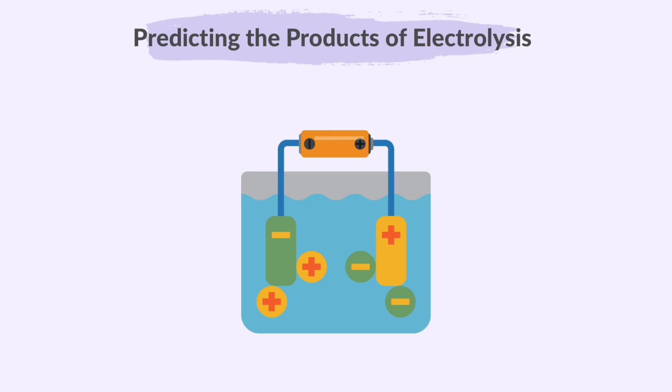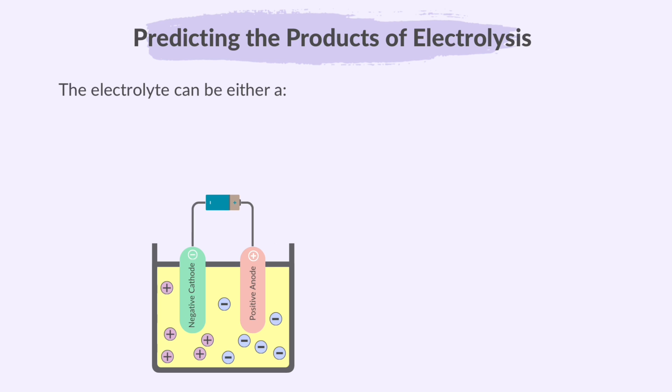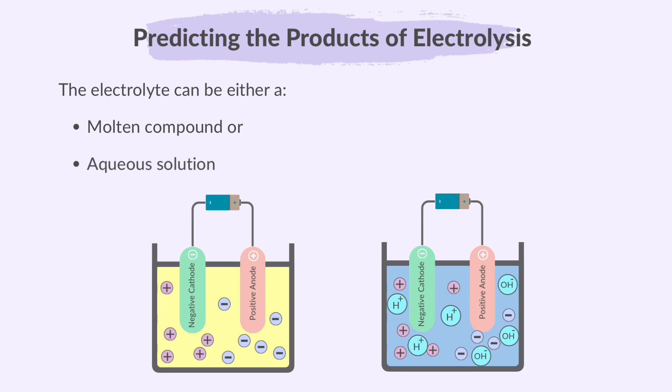We should be able to predict the identity of the products at each electrode during electrolysis. As we just learned, please remember that the positive ion or cation will always move towards the cathode and the negative ions or anions will always move to the anode. The electrolyte can be either a molten compound or an aqueous solution.